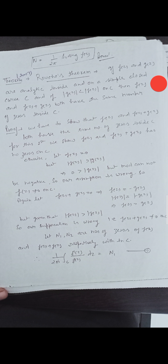Today I will discuss Rouché's theorem. If F(z) and G(z) are analytic inside and on a simple closed curve C, and if |G(z)| is less than |F(z)| on C, then F(z) and F(z) + G(z) both have the same number of zeros inside C.